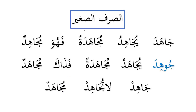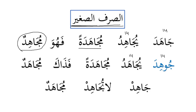As-Sarf As-Sagheer (small conjugation): unlike the full conjugation (14 past + 14 present forms + passive), the small conjugation focuses on past tense, present tense, مصدر, اسم الفاعل, and اسم المفعول. So: جاهَد يُجاهِد مُجاهَدةً — فهو مُجاهِد. The passive past form is interesting: جُوهِد (with ضمة, then Alif changes to Waw because Alif is incompatible with ضمة, giving the pattern فُوعِل).